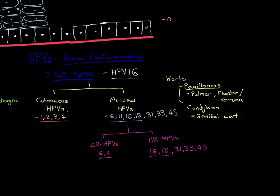Human papillomaviruses are non-enveloped viruses. They do not have a viral envelope and do not have a phospholipid bilayer around their capsid. The capsid is the outer layer of the virus particle, and it's made out of two proteins given the rather exciting names L1 and L2.